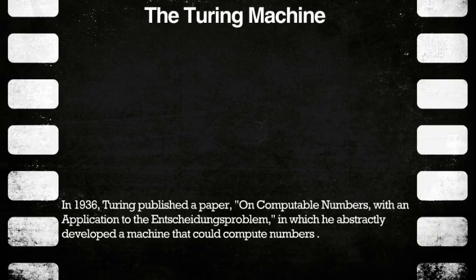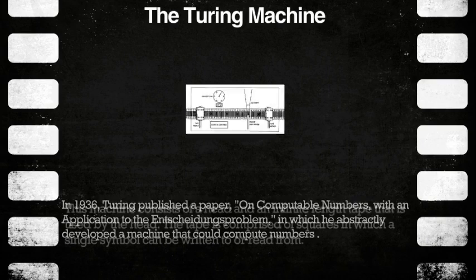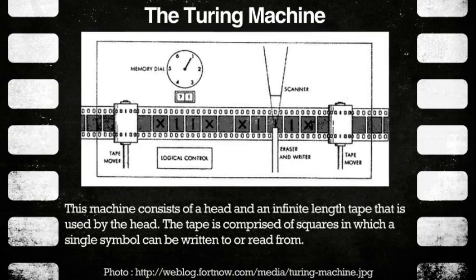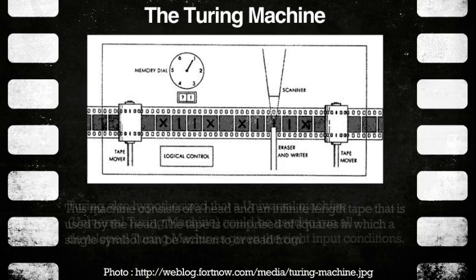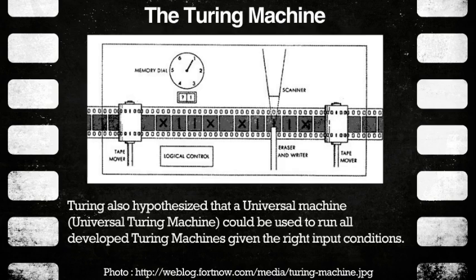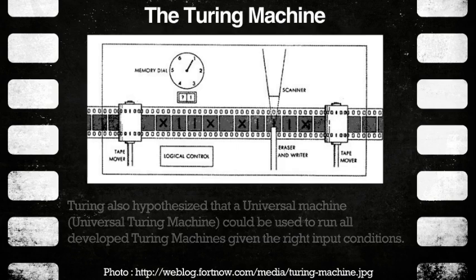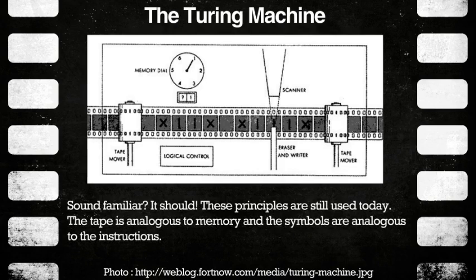In 1936, Turing published a paper on computable numbers with an application to the Entscheidungsproblem, in which he abstractly developed a machine that could compute numbers. This machine consisted of a head and an infinite length tape. The tape is comprised of squares in which a single symbol can be written to or read from. Turing also hypothesized that a universal machine could be used to run all developed Turing machines given the right input conditions. Sound familiar? It should — these principles are still used today.